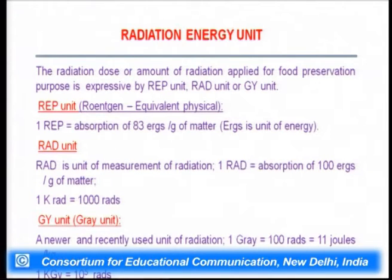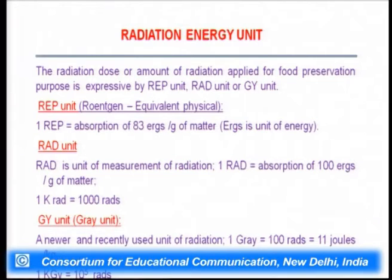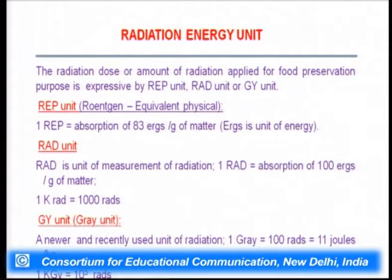The radiation dose applied for food preservation is expressed in three units. The RAP unit (Roentgen Equivalent Physical): one RAP equals absorption of 83 ergs per gram of matter. The RAD unit: one RAD equals absorption of 100 ergs per gram of matter; one kilorad equals 1000 rads. The Gray unit, the most commonly used: one Gray equals 100 RADs, which equals 1 joule per kilogram; one kilogray equals 10⁵ rads.